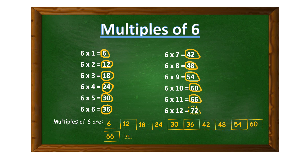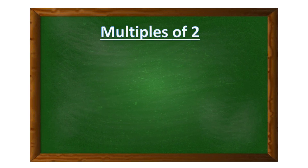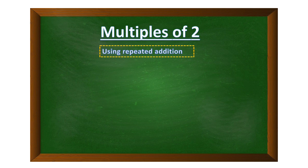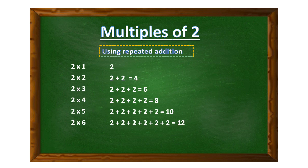We can also use the method of repeated addition to find multiples of a number. Let's find multiples of two using this method. We start with two and keep adding two to each result.